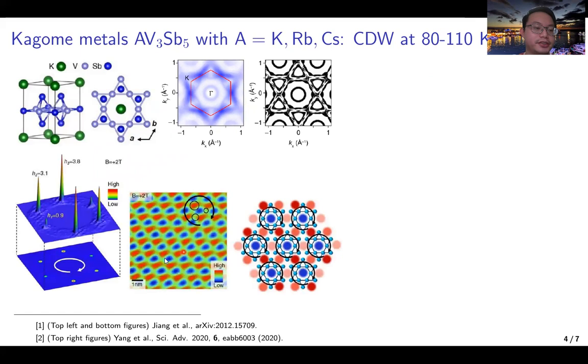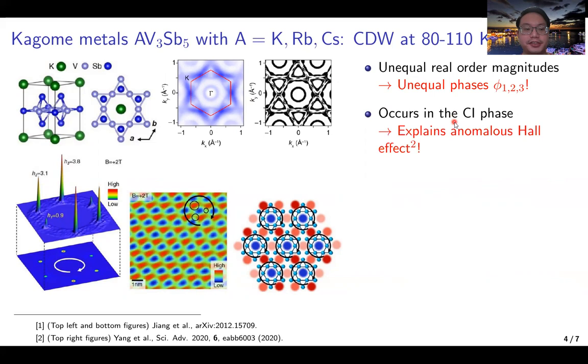If we go below a critical temperature between 80 to 110 Kelvin, the experiments found that there are density modulations at three different momenta, and these three momenta are precisely the nesting momenta of the hexagonal Fermi surface. A remarkable point is that the height of the peaks at the three momenta are different, and the question is how do we explain this kind of difference? Based on our theoretical model, we propose that the unequal real-order magnitudes at the three momenta can be explained by having unequal phases at the three orders in the 3Q complex orders.